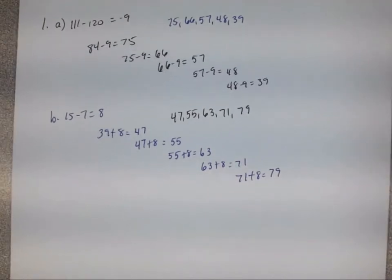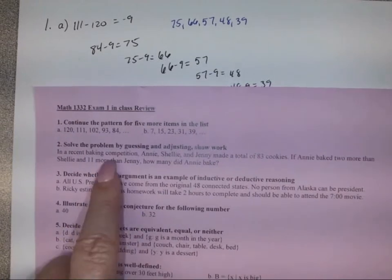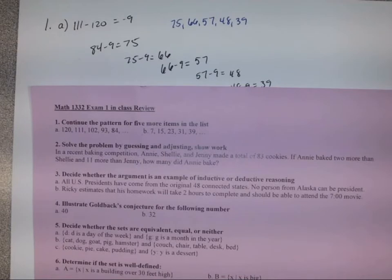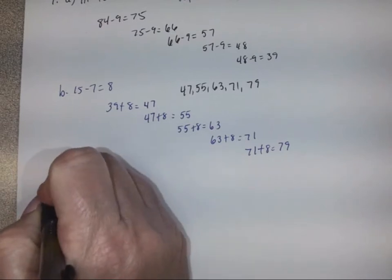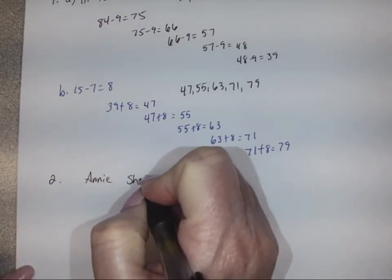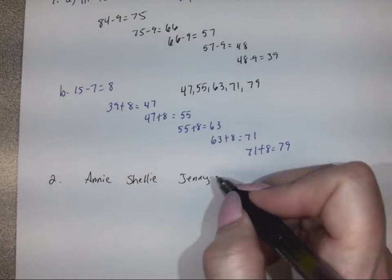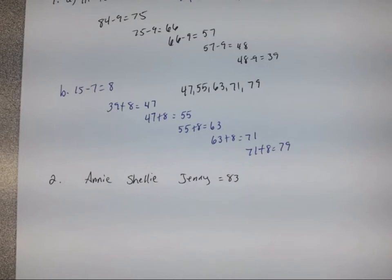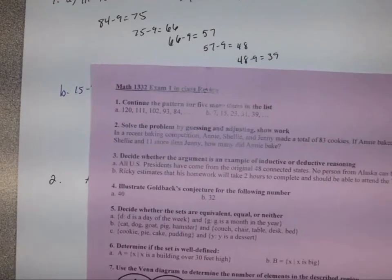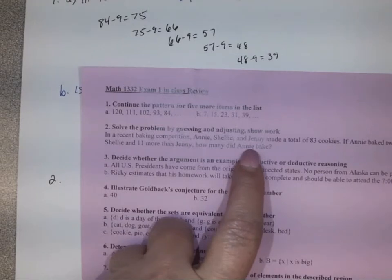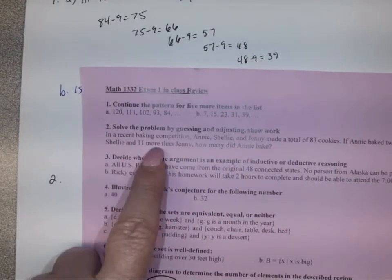The next question says to solve the problem by guessing and adjusting and show work. In a recent baking competition, Annie, Shelley, and Jenny made a total of 83 cookies. If Annie baked two more than Shelley and 11 more than Jenny, how many cookies did Annie bake? So we have Annie, Shelley, and Jenny, and together they made 83 cookies. We can start by giving Annie a number and seeing how it works out.